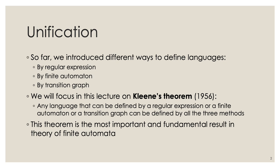So far, we have looked at different machines that aim to define languages in different ways. We looked at regular expressions, finite automata, and transition graphs, which can be seen as a generalization of finite automata because we relaxed certain constraints. Today we will focus on Kleene's theorem, which is of utmost importance. It was founded in 1956 by Kleene, and it states that any language definable by a regular expression, a finite automata, or a transition graph can be defined by all three methods.